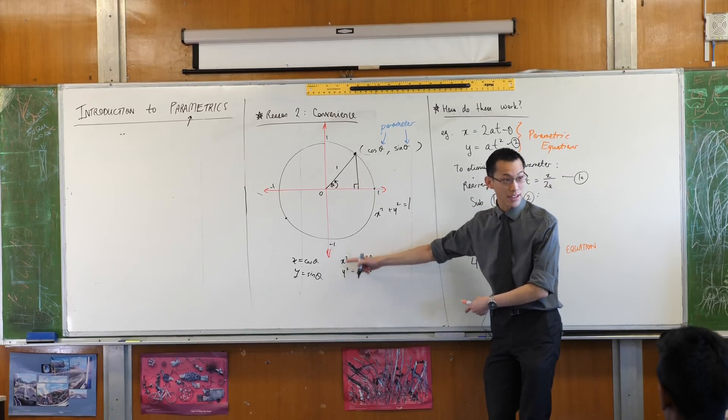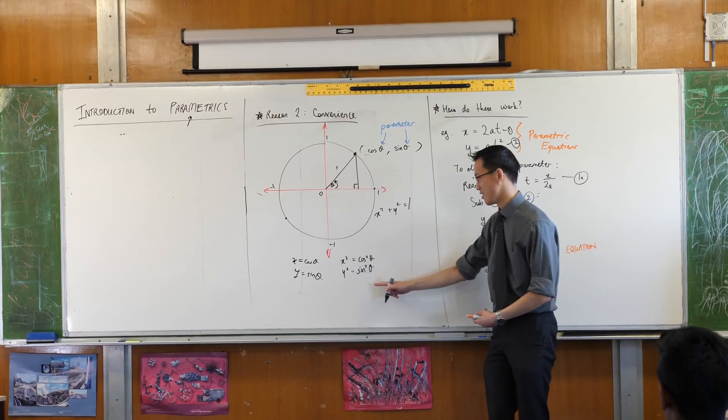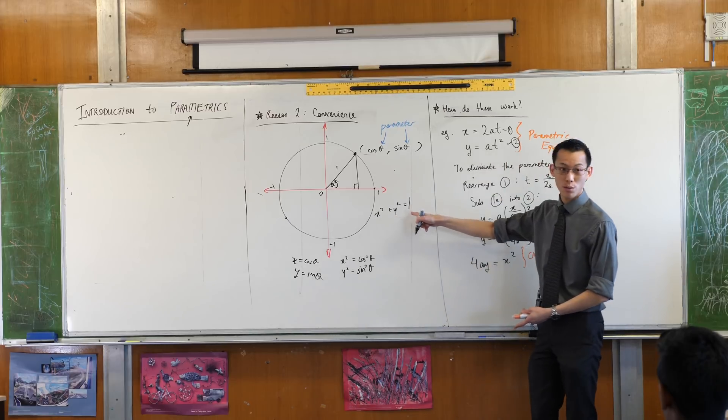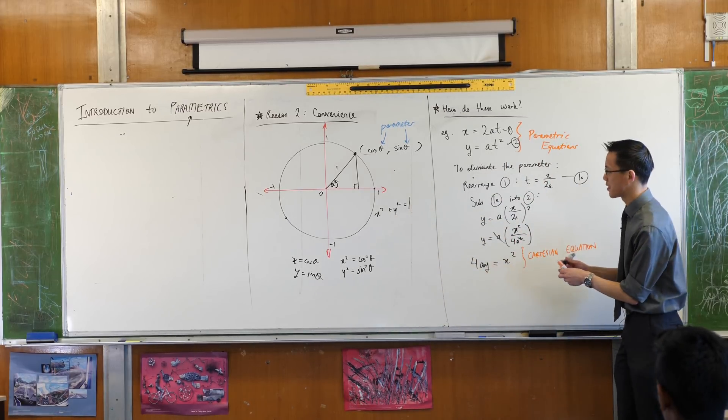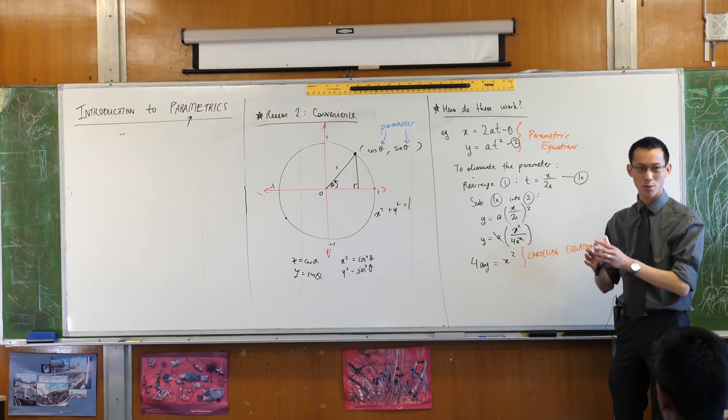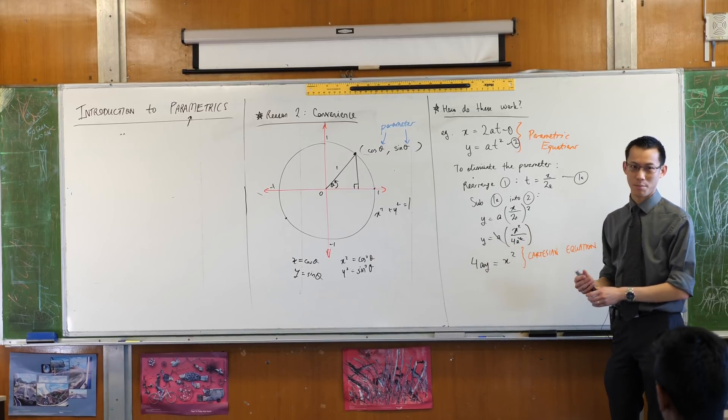You just add up the left hand sides, that gives you this, and you add up the right hand sides, which gives you this. You see how it comes out? So I'm just trying to highlight that for you because parameters are not a weird crazy idea. You've been dealing with them for a long time, you just haven't met their names.